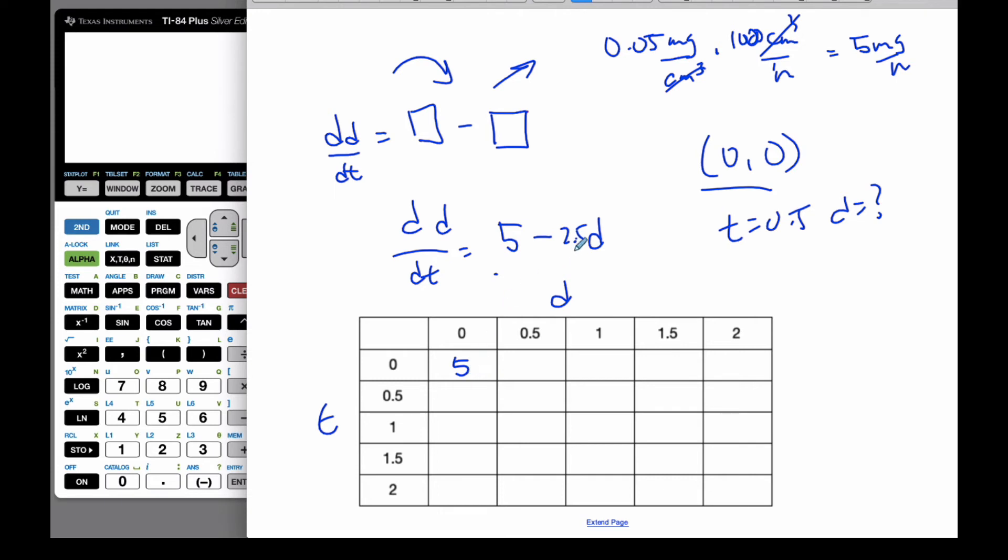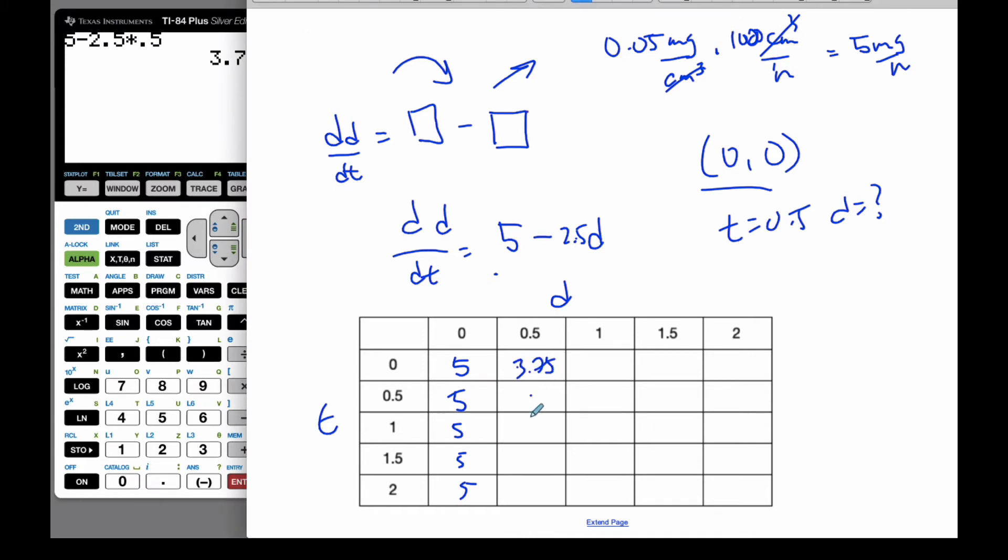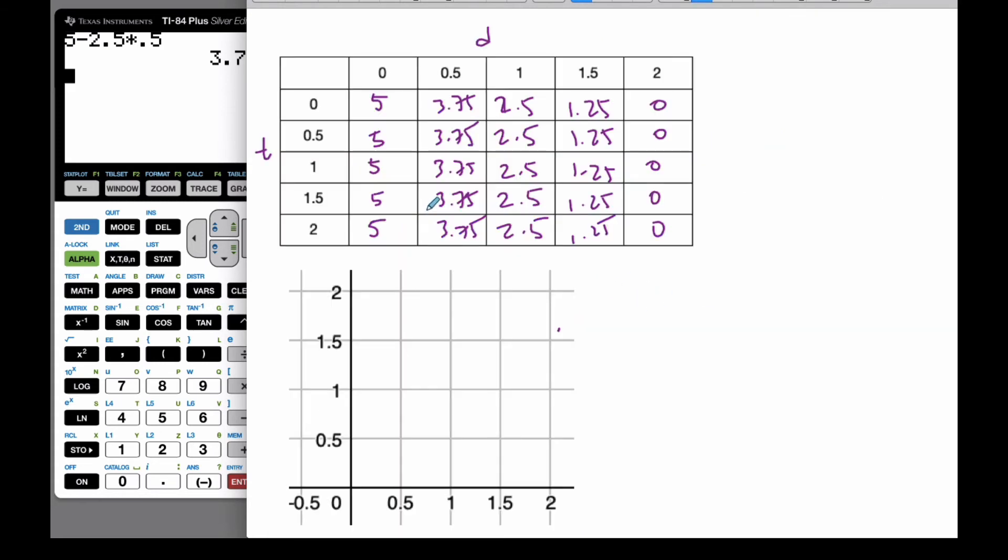So when D is zero, dD/dt is 5. So this is going to be 5, 5, 5, and 5. When I put 0.5 into here, 5 minus 2.5 times 0.5 gives me 3.75. So 3.75 all the way down. 1 goes in there and I get 2.5. This will be 1.25. And then this will be 0 all the way down when I plug it in.